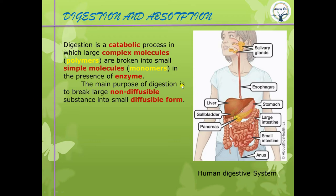Catabolism is an exothermic reaction — exo means outside, thermos means heat — in which large molecules are broken down into small simpler molecules. The opposite of catabolism is anabolism: the joining of small units to form large units with the help of energy. Anabolism is an endothermic reaction — endo means inside, heat-taking.